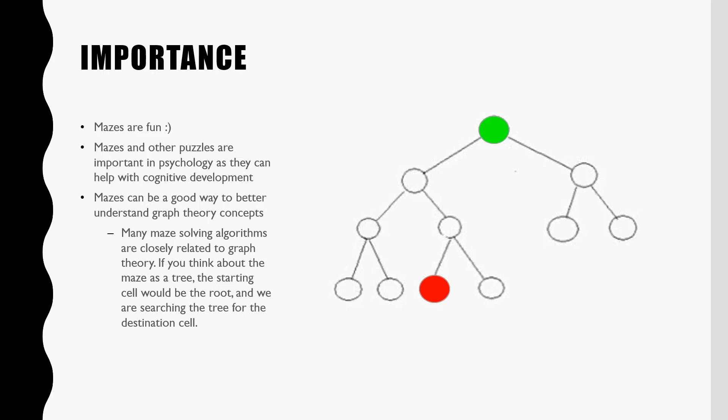And we are searching the tree for the destination cell, which is represented by the red node. Mazes also play a huge role in the world of machine learning and AI, as they can be used to help teach the AI.